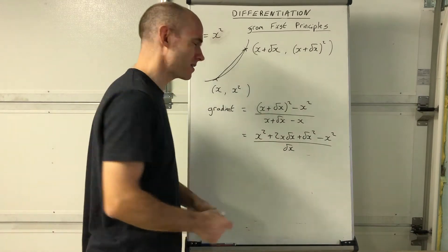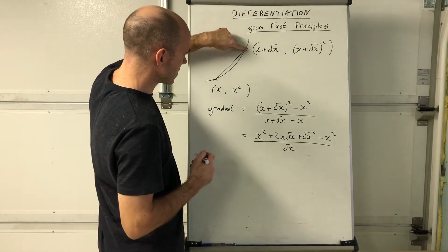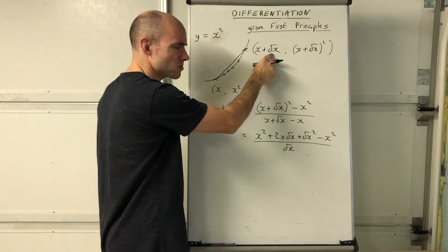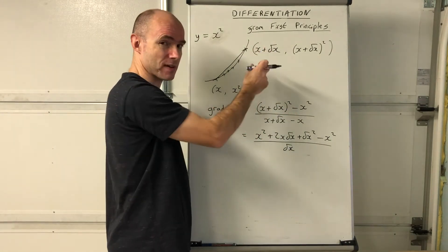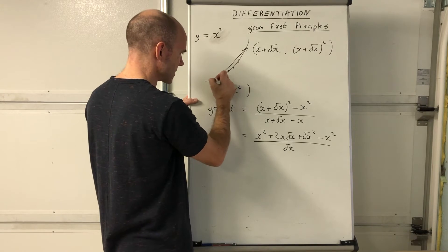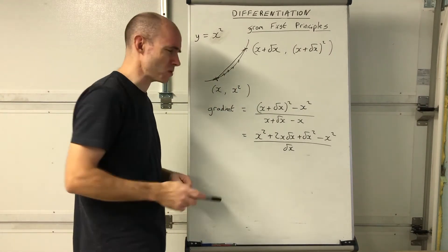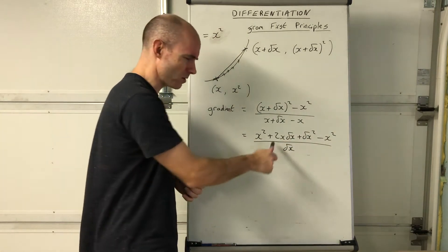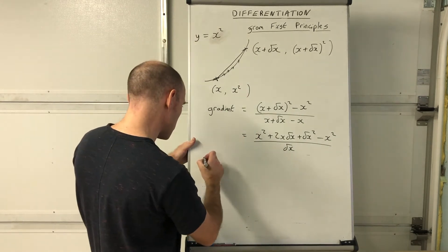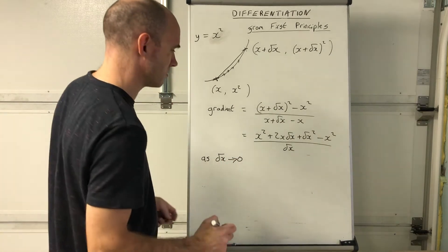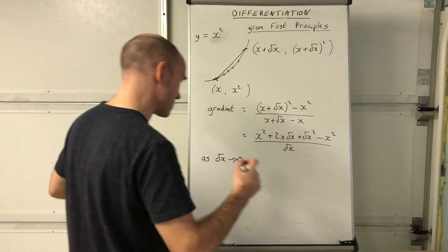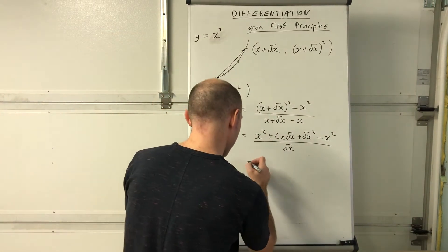Here's the really fascinating bit. What happens as this second point gets closer and closer to the first? Delta x is getting smaller and smaller. If the point is exactly on the first point, delta x would be zero - but you can't substitute delta x = 0 because you'd be dividing by zero, which is undefined. So instead we look at what happens as delta x tends towards zero.